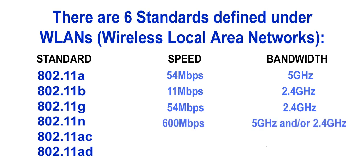802.11n was designed to run at both 2.4 gigahertz and 5 gigahertz and is compatible with 802.11b and 802.11g. The benefit of 802.11n is that it can run at the less crowded 5 gigahertz space to provide better coverage, and it was touted to have a possible throughput of 600 megabits per second. More recently, 802.11ac came out in 2013, uses only 5 gigahertz frequency, and is touted as having a possible throughput of 3.2 gigabits per second. It was developed to provide better connectivity for home media and streaming services along with better connectivity for all wireless devices in general.